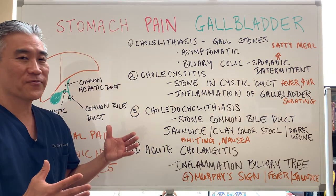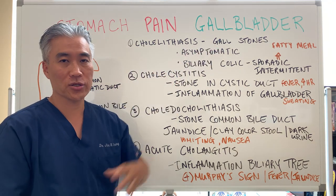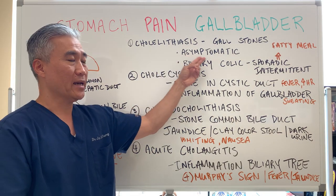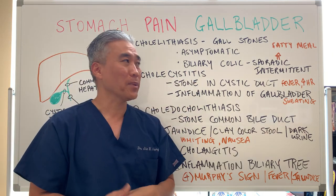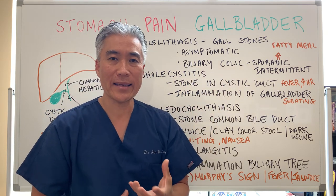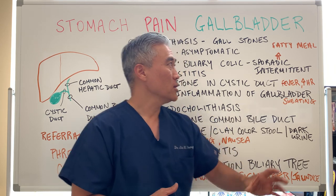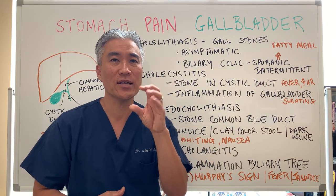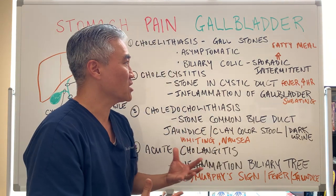There are a lot of different terms for what can happen. Cholelithiasis is basically gallstones or stones within the gallbladder. A lot of these can be asymptomatic because they're small. But when it does become problematic, it can cause something called biliary colic — sporadic and intermittent, usually with food, especially high-fat foods or oils. When you have a fatty meal, you may have sporadic or intermittent contraction of the gallbladder where it's compressing on the stones and creating some discomfort.